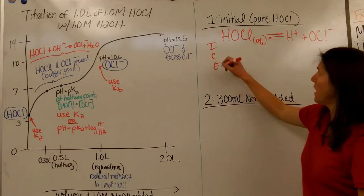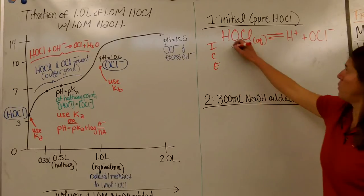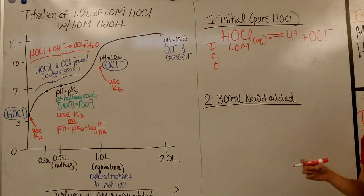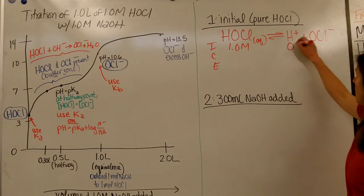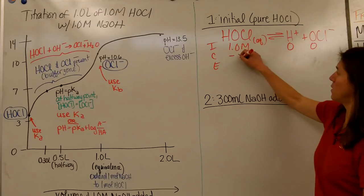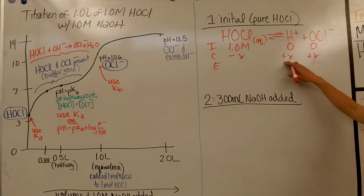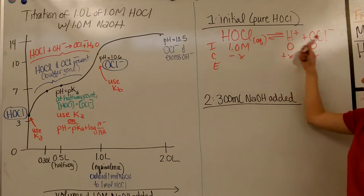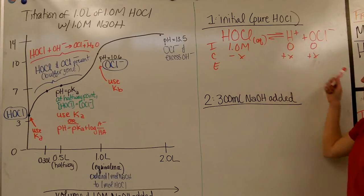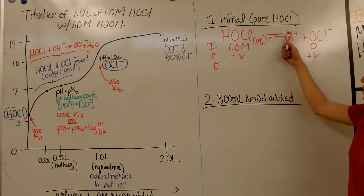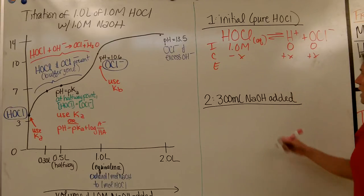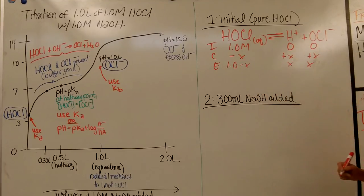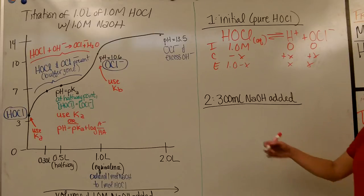I'm going to set up an ICE chart. Initially, I have 1 molar of my weak acid, none of the products to begin with. It's going to dissociate by some amount X, so the products will each increase by X. Remember, X is stoichiometric — since this is a one-to-one-to-one ratio, it's just X, X, X. If there had been a coefficient of 2 somewhere, we'd have to put 2X there. At equilibrium, the acid is 1 minus X, and the products are each X.